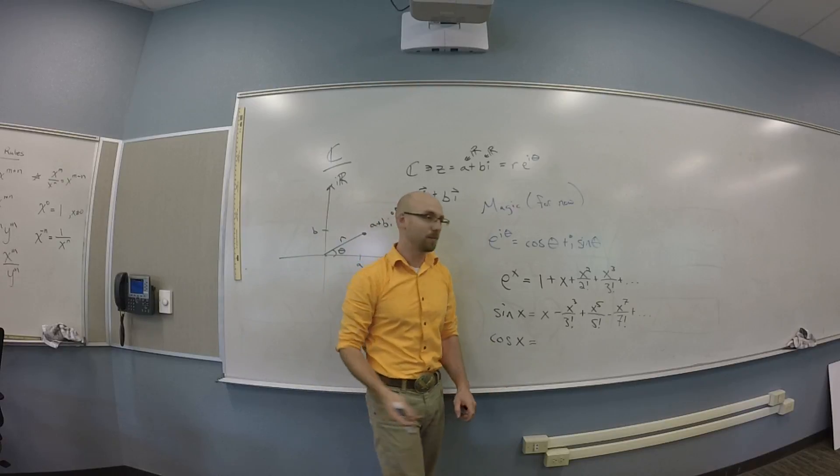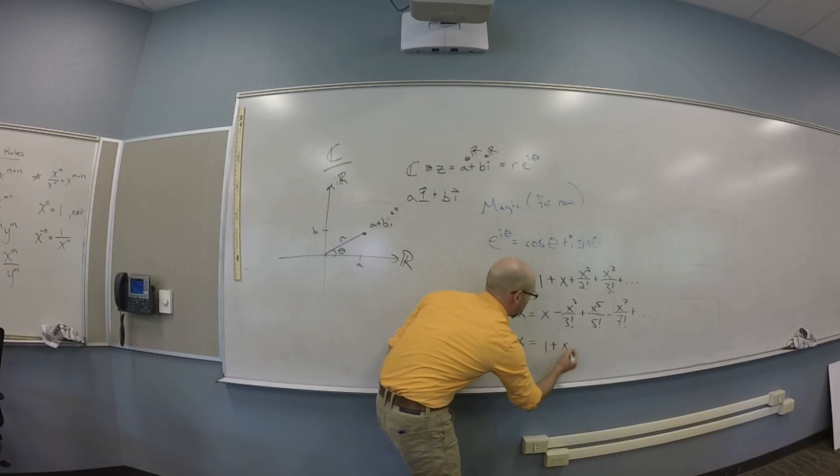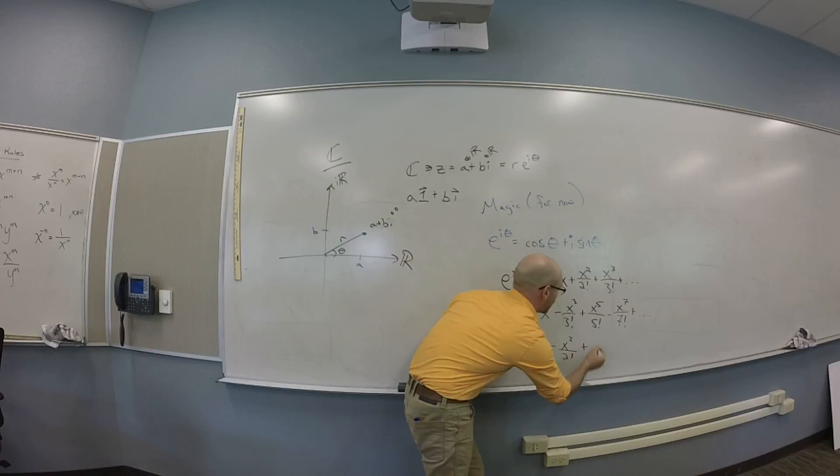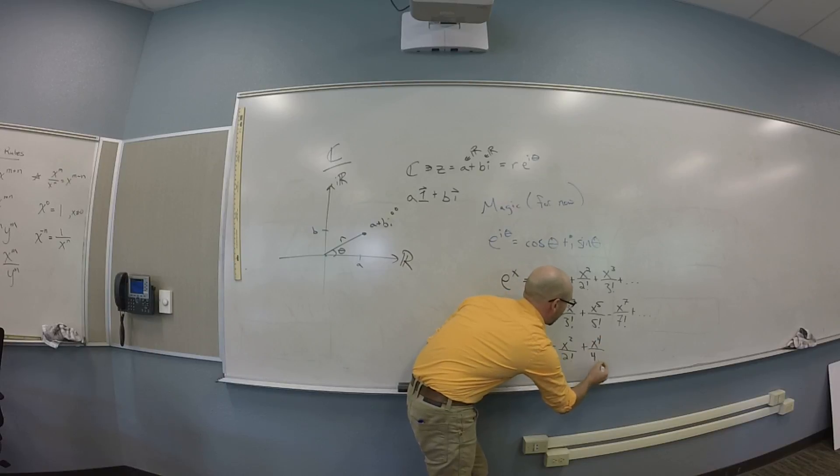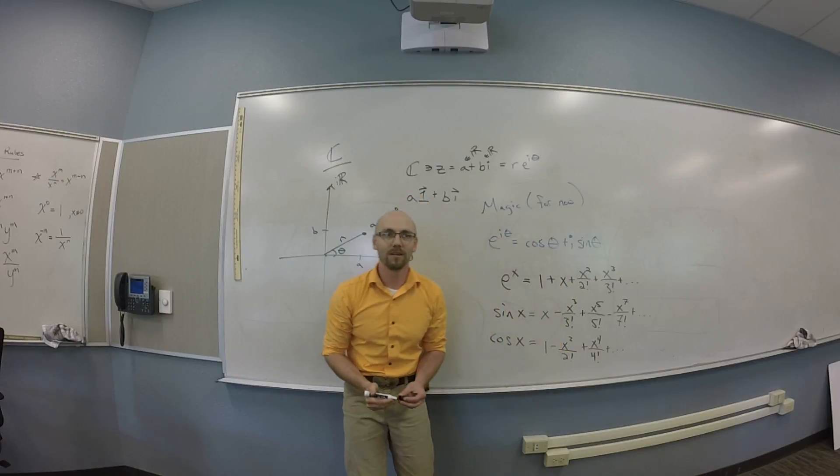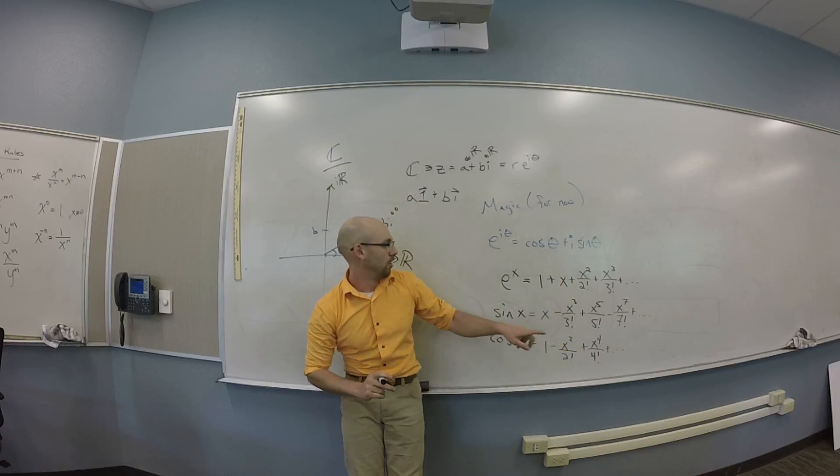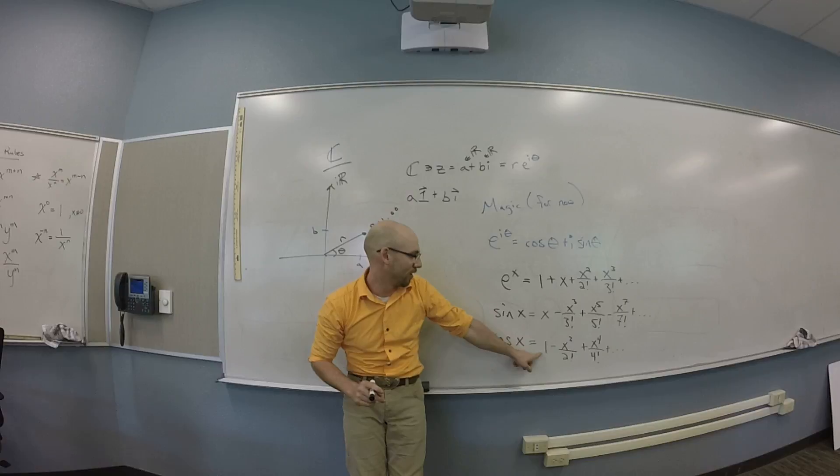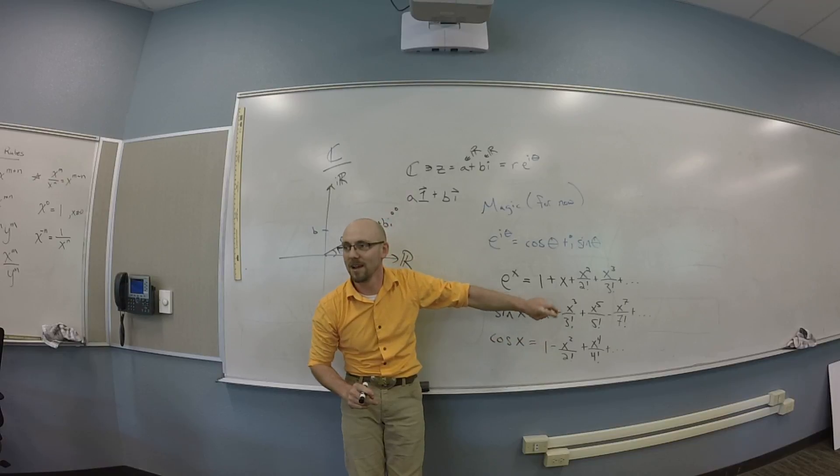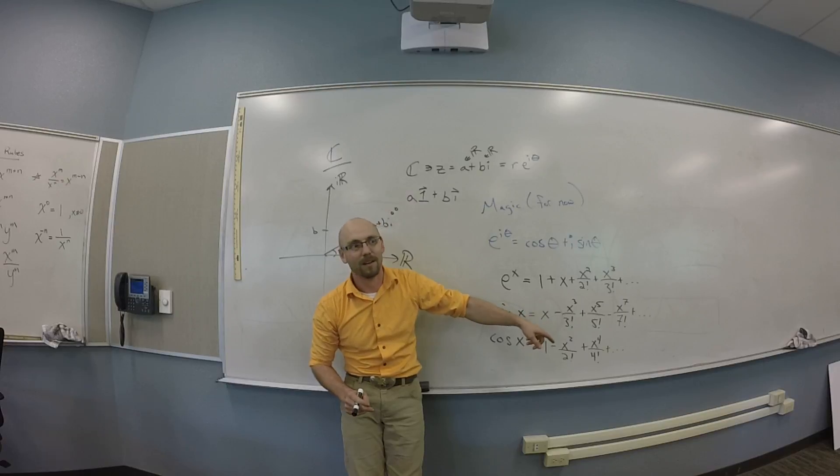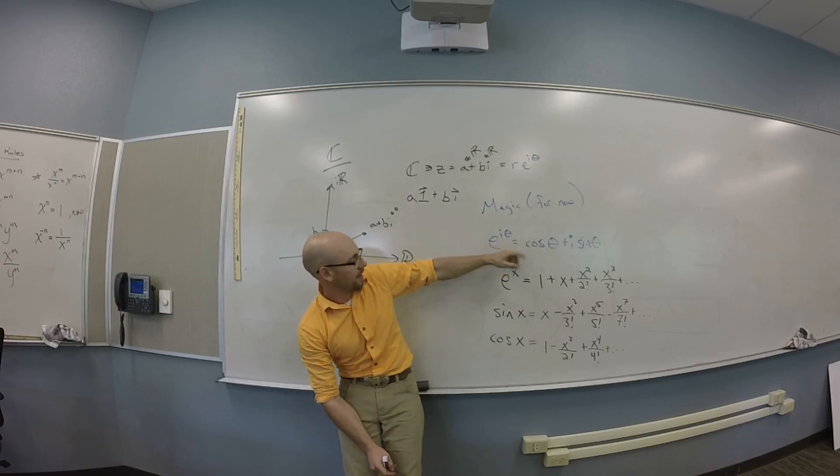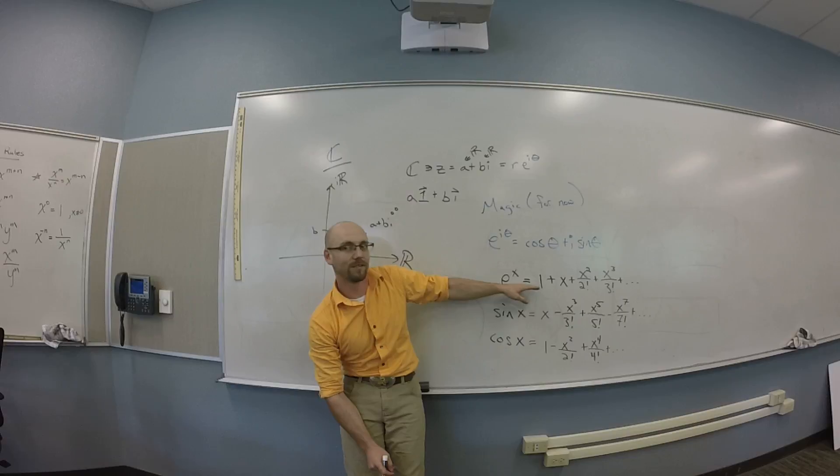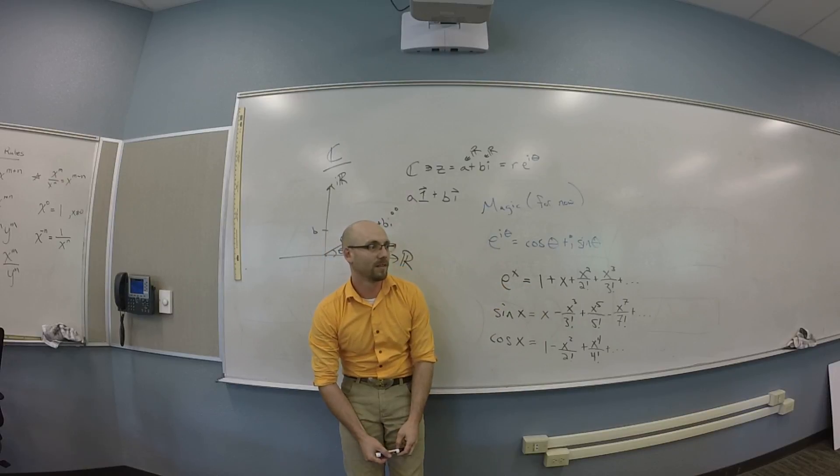So these are what's called Taylor polynomials. And then for cosine, we're going to build the same thing. And we're going to get 1 minus X squared over 2 factorial plus X to the 4th over 4 factorial and kind of so forth. And notice that this one looks like the odd ones out of here. And this one looks like the even ones. And they alternate in sine, right? If you plug I theta into these two and this one, you'll notice that they're the same.